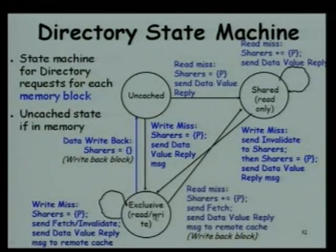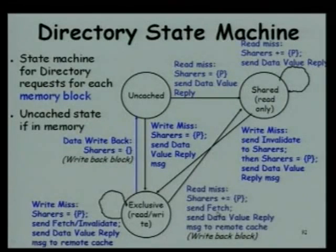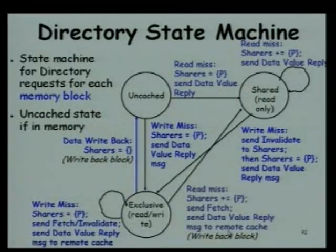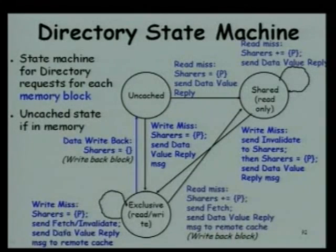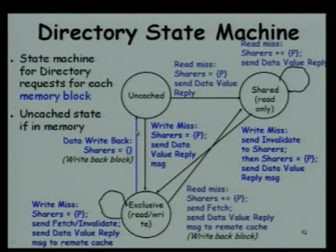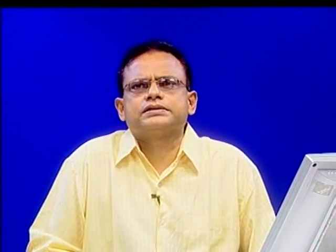If it is in the exclusive state and another node generates a read miss, it increases the sharer set and fetches the data from the owner. When it gets a write miss, it fetches and then invalidates. If it gets a data write-back request from one of the nodes, it initializes the sharer set to null — meaning a processor has replaced its block and written data back.